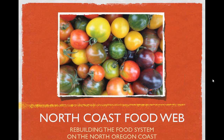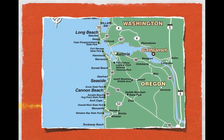North Coast Food Web exists to rebuild the food system on the North Oregon coast. We're in the northwest section of the United States. This is the Lower Columbia Pacific Region. We're surrounded on two sides by water — the Pacific Ocean on the west and the Columbia River, which is our border between Oregon and Washington. Our service area actually extends over into the Long Beach Peninsula and the Wahkiakum and Pacific County areas of Washington.